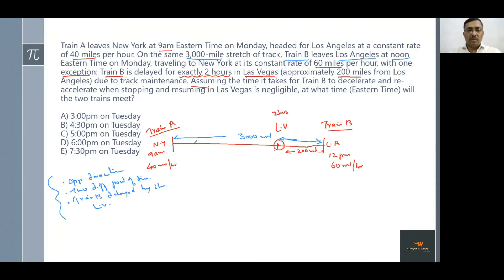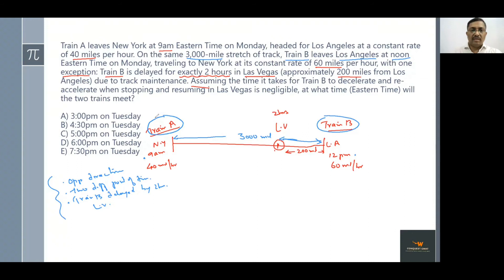Whenever you see such questions, always try to bring them to a common point in time. Here, Train A begins at 9 AM and Train B starts at 12 PM, so we bring them to a common point. Before Train B starts, Train A was running alone for three hours covering part of the 3000-mile stretch.